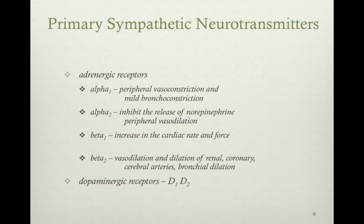Primary sympathetic neurotransmitters: there are many receptor sites for the autonomic nervous system adrenergic side. The adrenergic receptors are alpha-1, alpha-2, beta-1, and beta-2. We also have dopaminergic receptors — delta-1 and delta-2 — to consider.